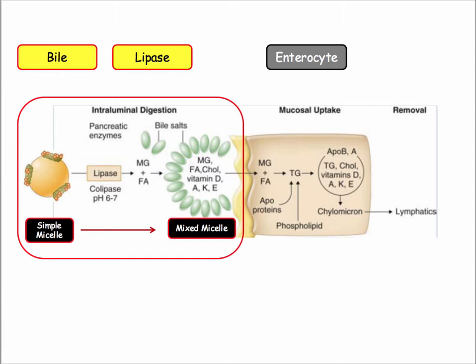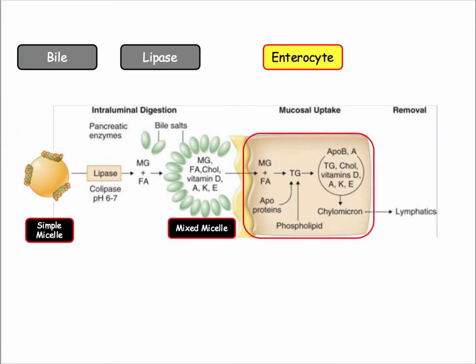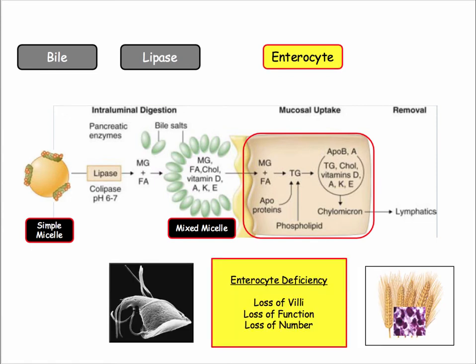The mixed micelle is delivered to the enterocyte surface. The final step involves transport and reconstitution of fats into the chylomicron within the enterocyte. Diseases of enterocyte deficiency are covered in the malabsorption video — that video covered giardia, celiac disease, and Whipple disease.